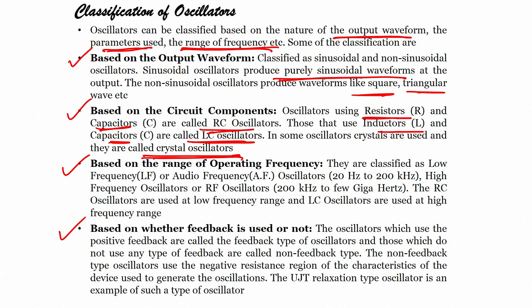Based on operating frequency, oscillators are classified as low-frequency or audio-frequency (LF/AF) oscillators, and high-frequency or RF oscillators. RC oscillators are used at low frequencies and LC oscillators are used at high frequencies. So based on frequency, if it is a low-frequency oscillator it will generally be an RC oscillator, and if it is high-frequency it will be an LC oscillator.